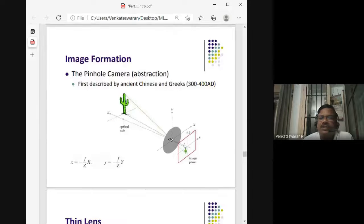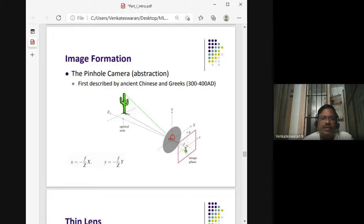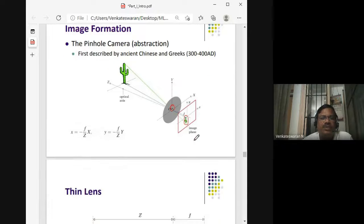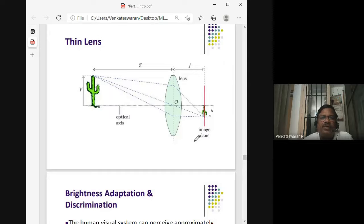The pinhole camera focuses light through a small aperture. The size of the aperture is responsible for the kind of image that is being focused. I'm not getting into all these details.